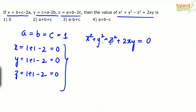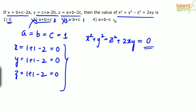Now substitute into x squared plus y squared minus z squared plus 2xy. Everything is 0, so this results in 0 plus 0 minus 0 plus 0 equals 0. The final answer should be 0. Looking at the options: option 1 is 0 — maybe this is the answer, but you can't confirm until you check the remaining options.